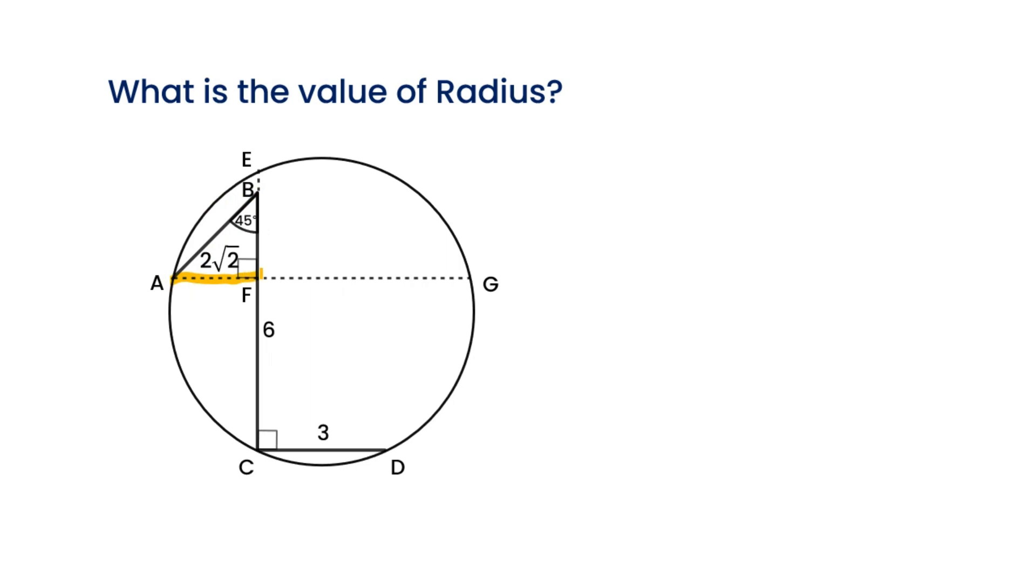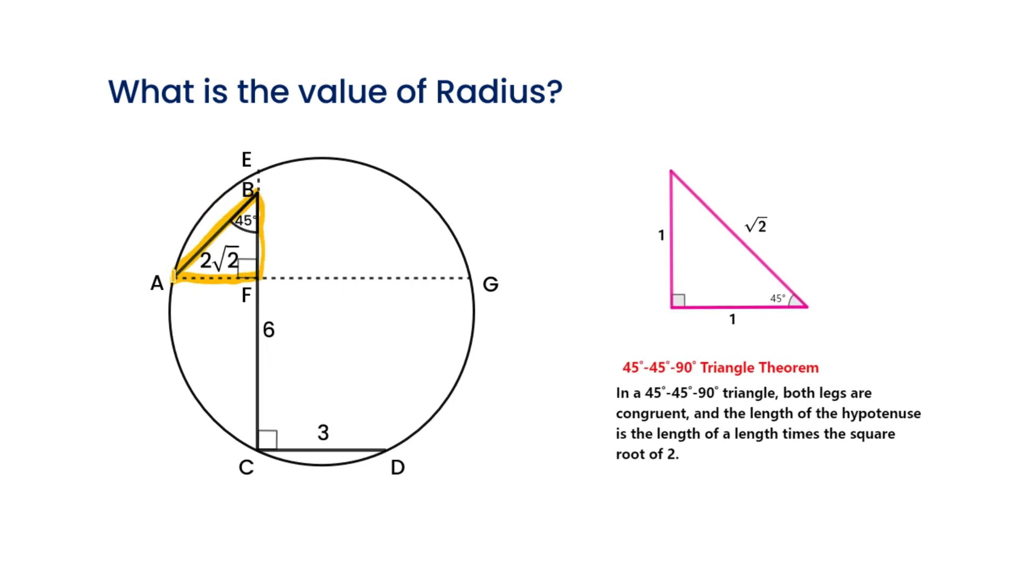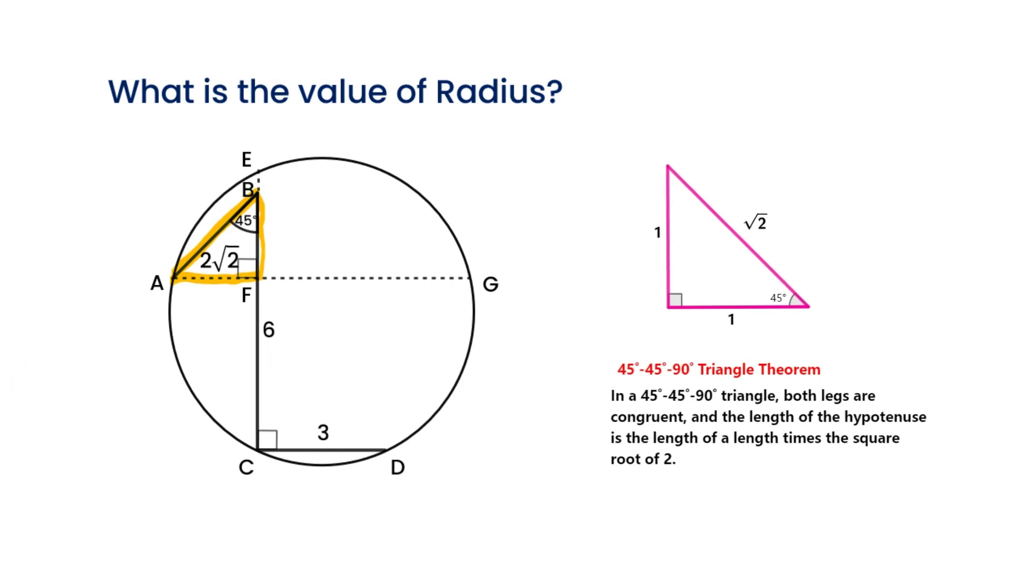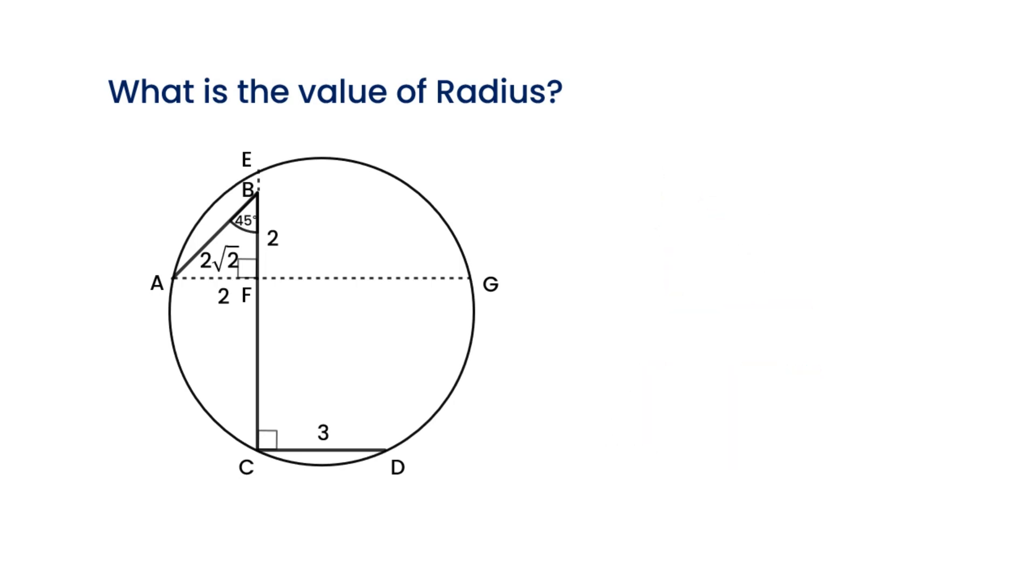Let's focus on triangle ABF. From the 45-45-90 degree triangle theorem, we'll get AF equals BF, which is 2, and CF is equal to 4.